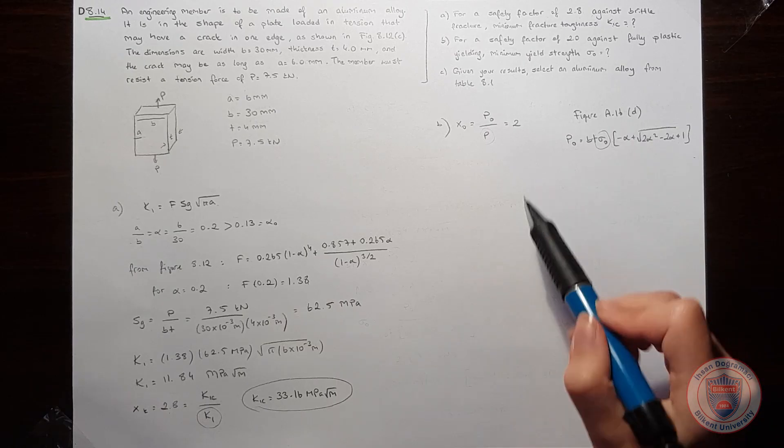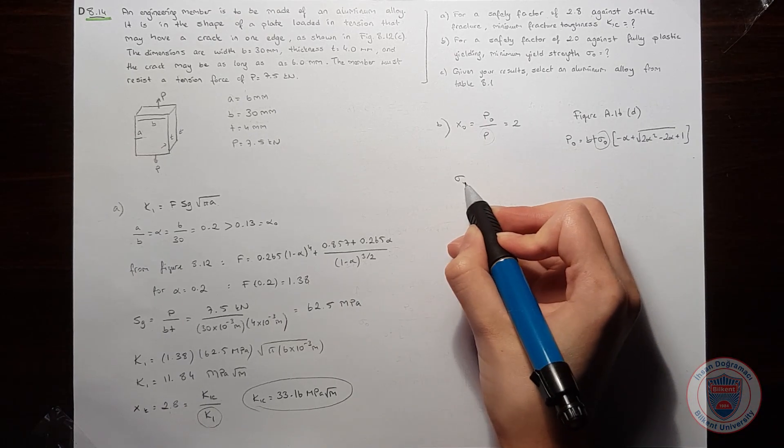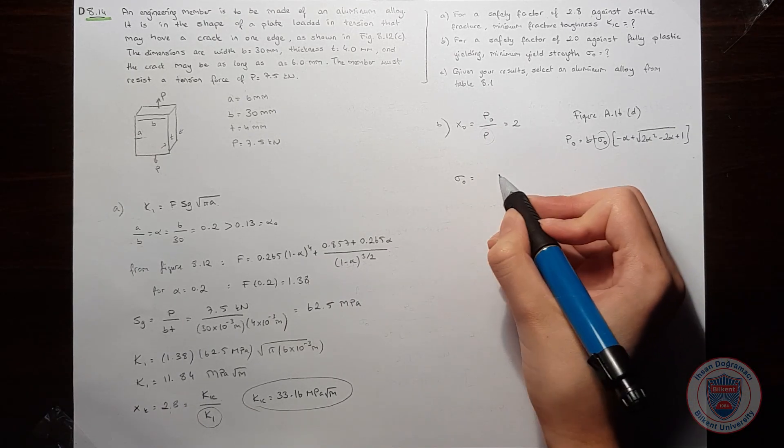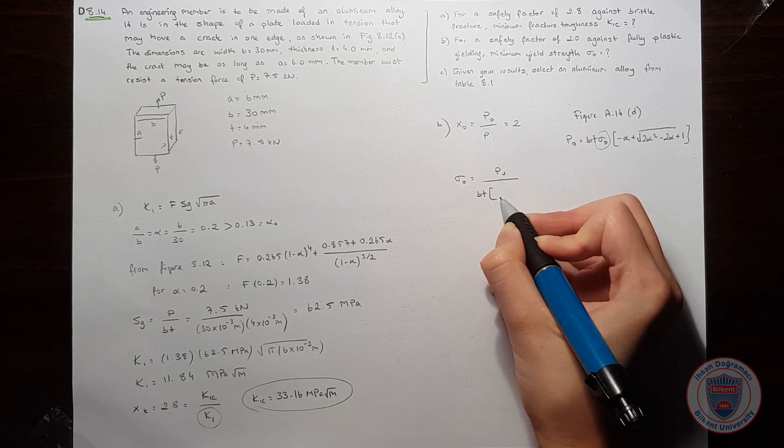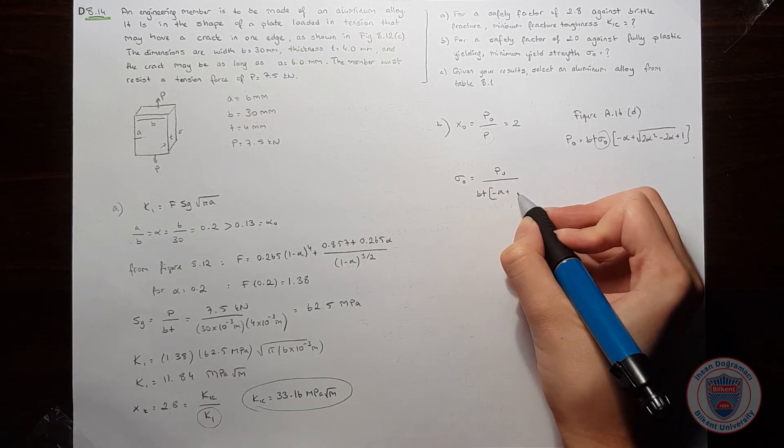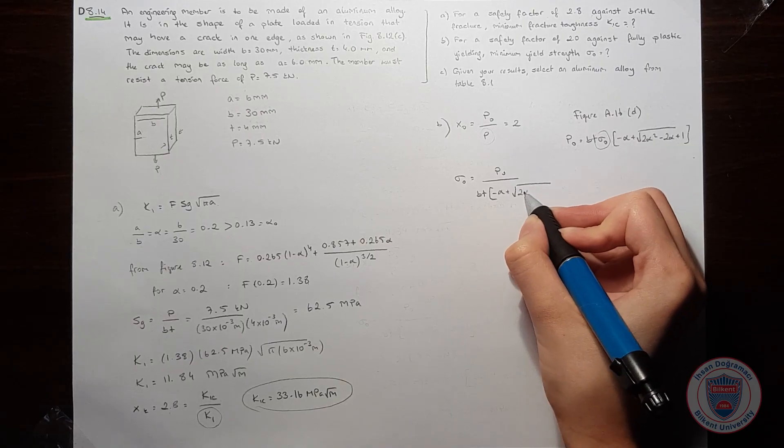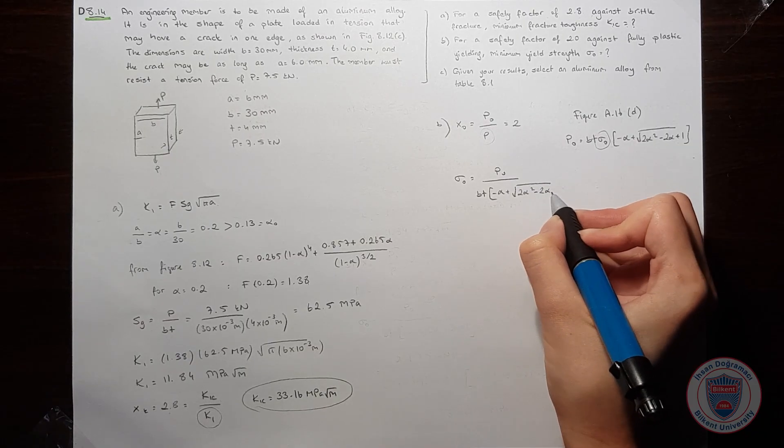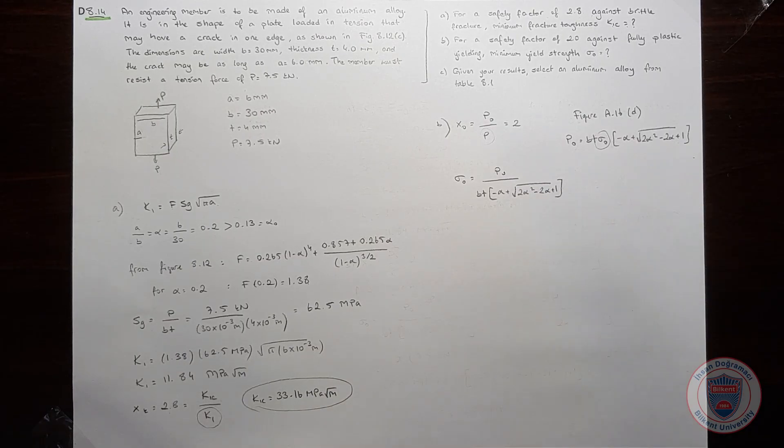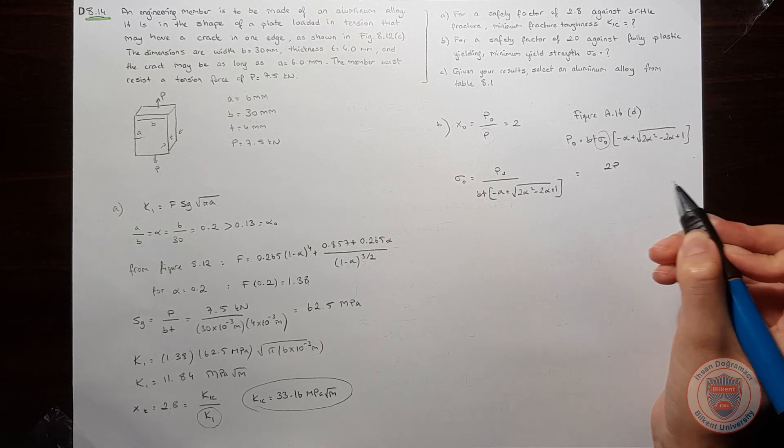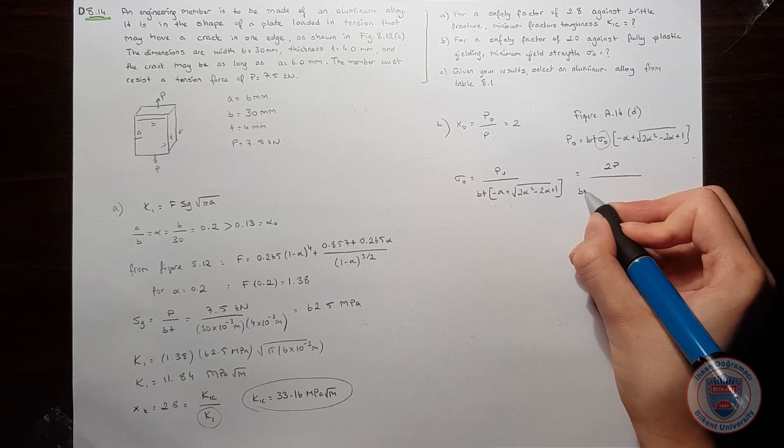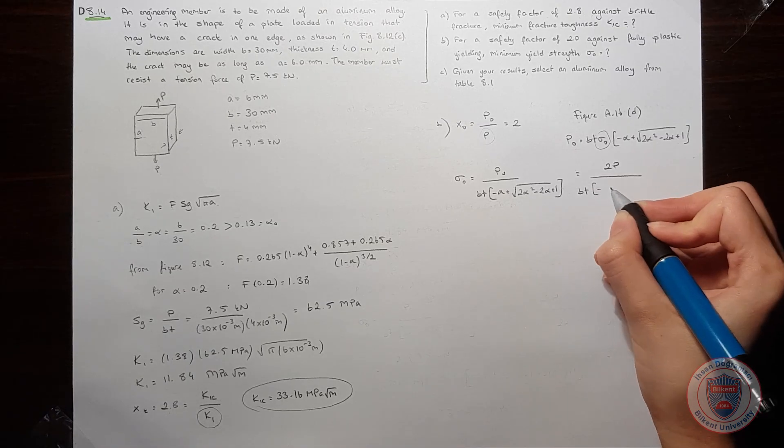So we can see that there is a sigma_0 here. And when we look at the equation, we saw that we know p. So when we make some rearrangements, we can see that sigma_0 is p0 over BT, and again, this equation. And you can see that p0 is equal to 2p.